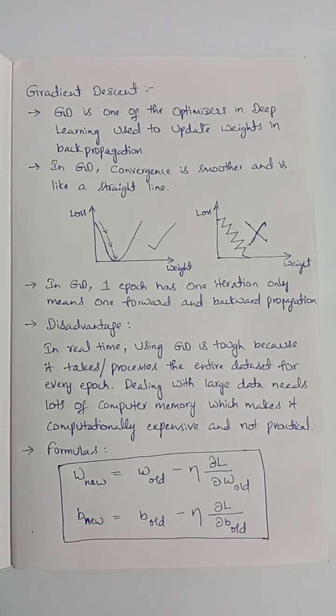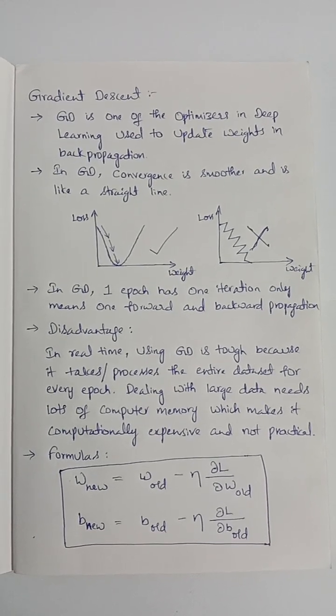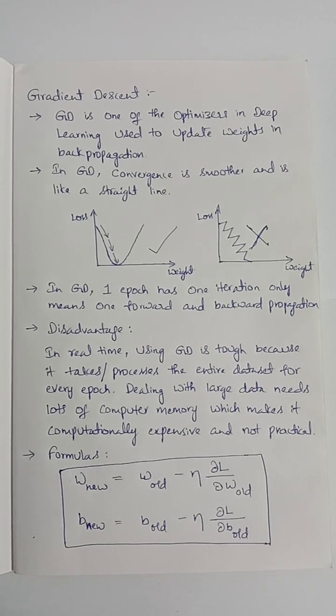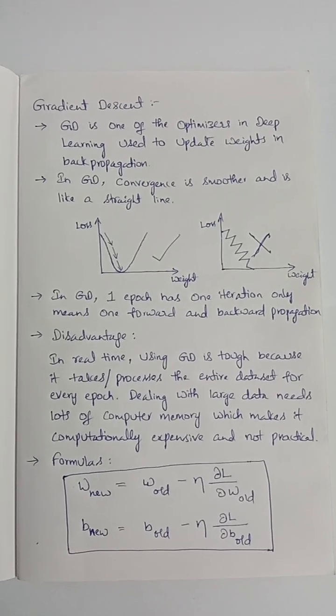B_new equals to B_old minus learning rate into derivative of loss with respect to derivative of B_old.